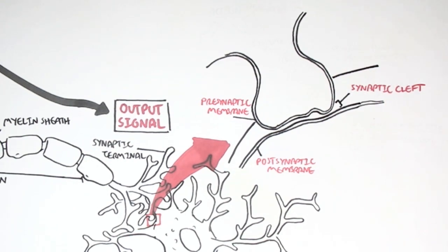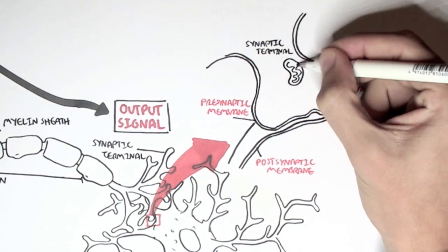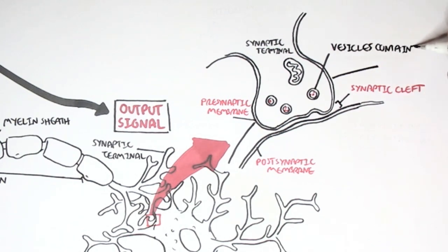In the ends of the synaptic terminal region, like here, we find many mitochondria and vesicles containing what's called neurotransmitters. These neurotransmitters are released for communication, for the communication process between cells.